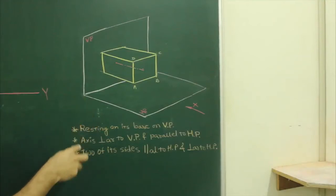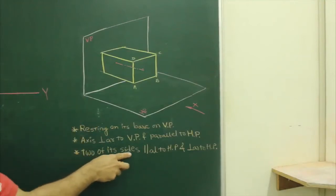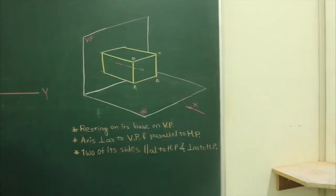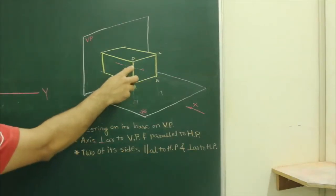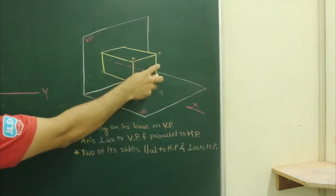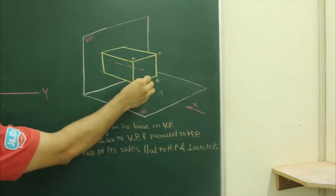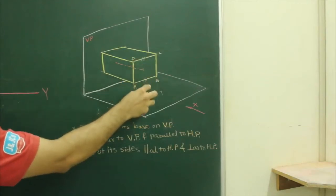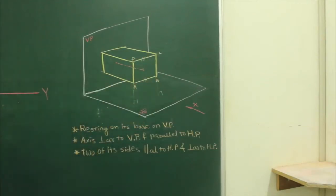And if you see, we have given two of its sides are parallel to HP and parallel to VP. These two sides are perpendicular to HP, that is Ad and Bc are perpendicular to HP and Ab and Cd are perpendicular to HP. Now see this.